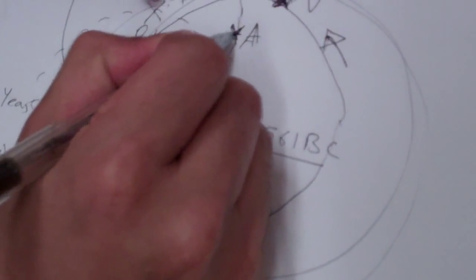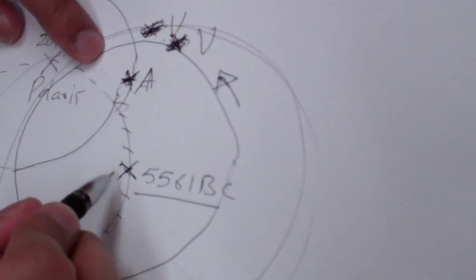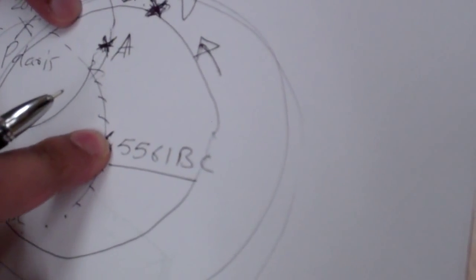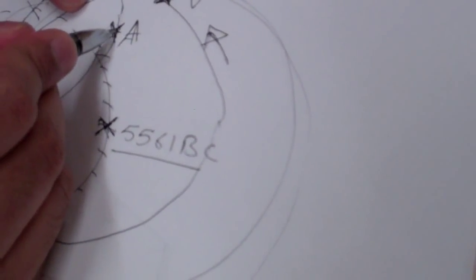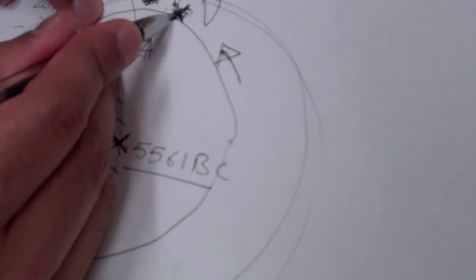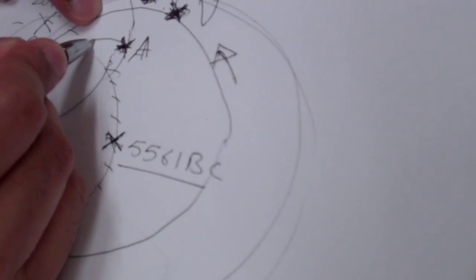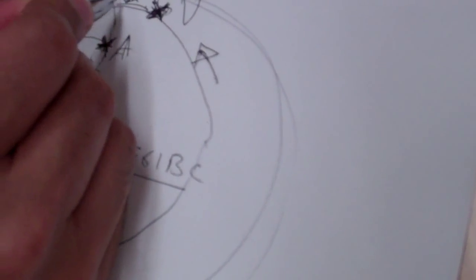Now if you follow this star of Arundhati and this star of Vasishtha with respect to this as the center point, center of the circle, you will notice that it will appear not much difference but it will appear that Arundhati is going ahead of Vasishtha.